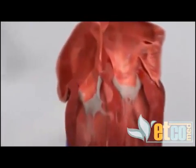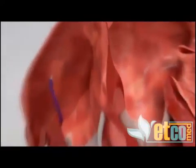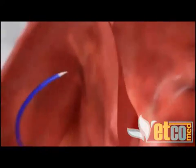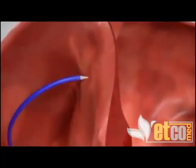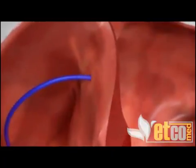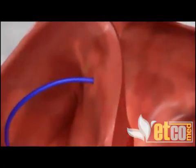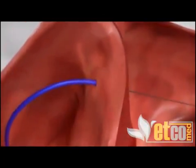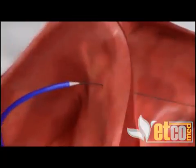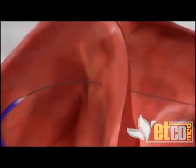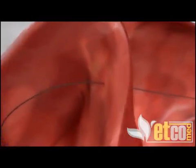The catheter is used to create a very small opening in the heart wall between the left and right atria. The catheter is then withdrawn, leaving only the guide wire in place in the left atrium.